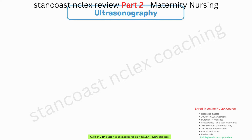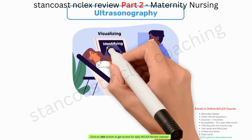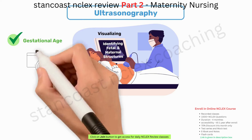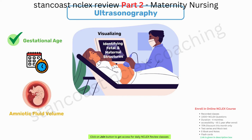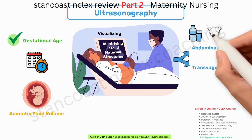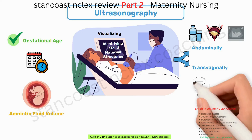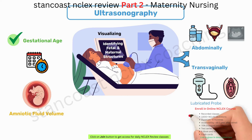Ultrasonography assumes a critical role in visualizing and identifying fetal and maternal structures. It assists in confirming gestational age, estimating the due date, and evaluating amniotic fluid volume. Ultrasonography can be conducted abdominally or transvaginally. For abdominal ultrasounds, clients may be advised to consume water to fill the bladder for enhanced visualization. Transvaginal ultrasound entails the insertion of a lubricated probe into the vagina and is not associated with any known risks to either the client or the fetus.